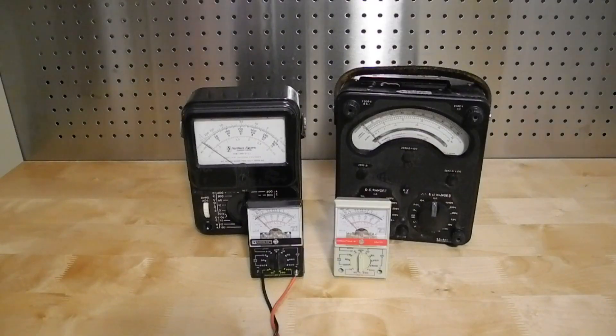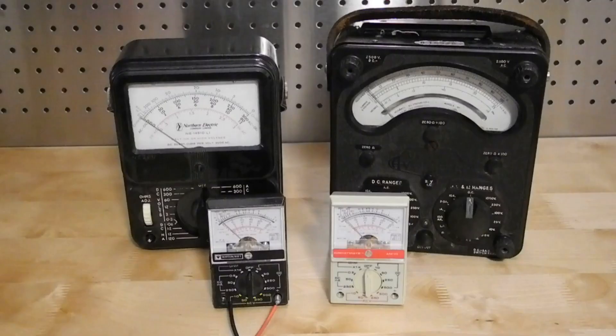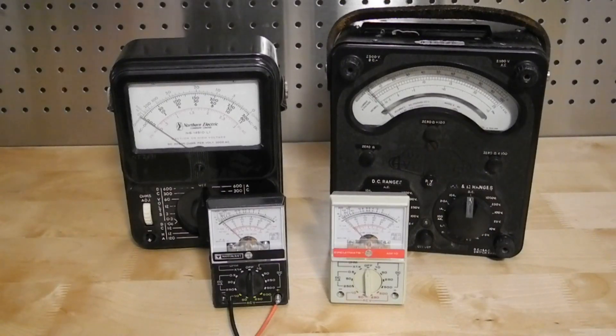The meter movement can't directly measure AC since it responds to the average value and AC has an average value of zero. A rectifier, rather a tube or solid state diode, can convert the AC to DC so that the movement will respond and the meter can be calibrated to show RMS voltages for a sine wave. With a suitable switching arrangement, you can provide a meter that can measure AC and DC current and voltage and resistance in several ranges.